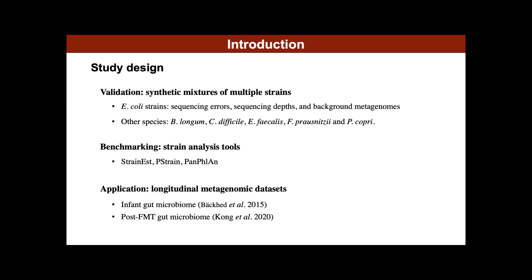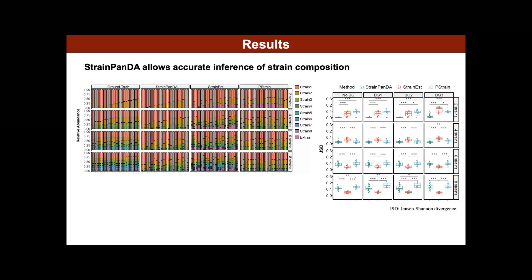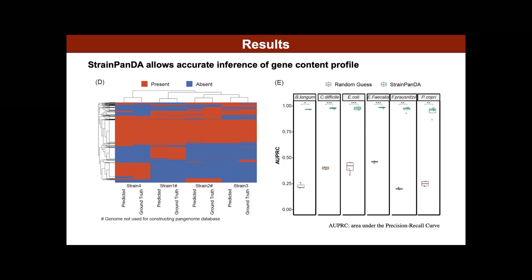Finally, we applied StringPanda to longitudinal metagenomic datasets, including an infant gut microbiome dataset and post-FMT gut microbiome datasets. The validation results showed that StringPanda can accurately infer string composition and provide comparable performance to other SNV-based tools. In addition, StringPanda provides accurate inference of gene content profile of coexisting strings, while other tools cannot provide such information. The results showed that the predicted gene content profile was close to the ground truth and much better than random guess.